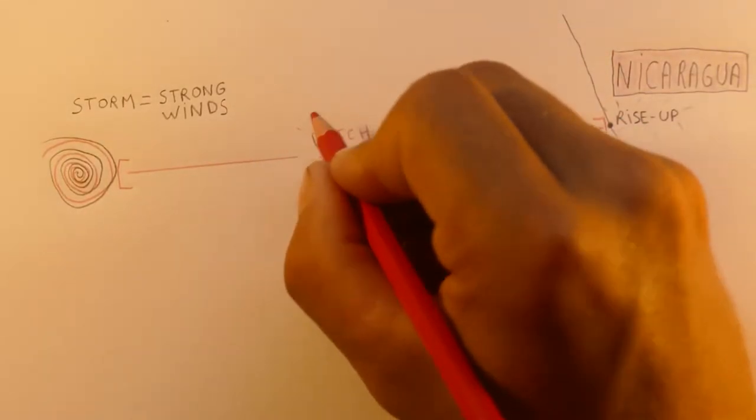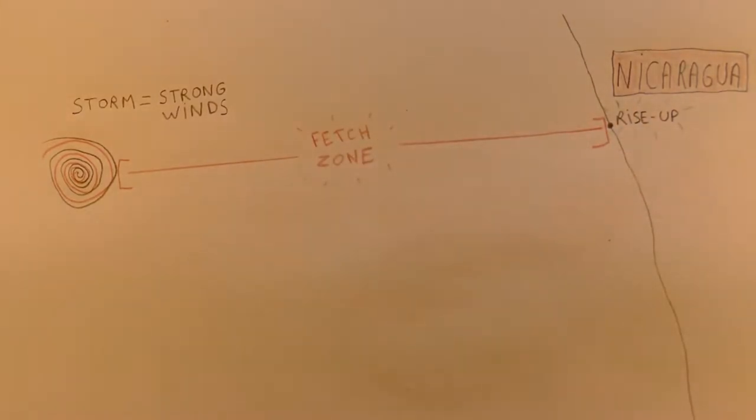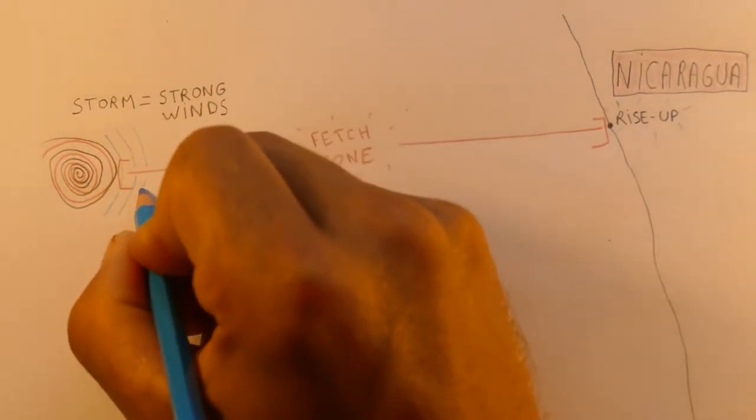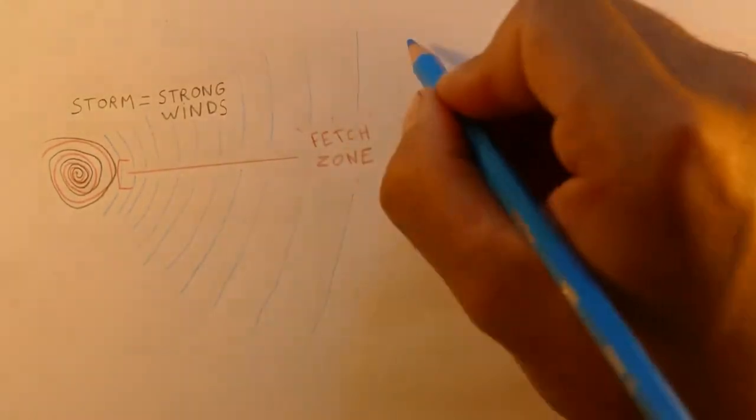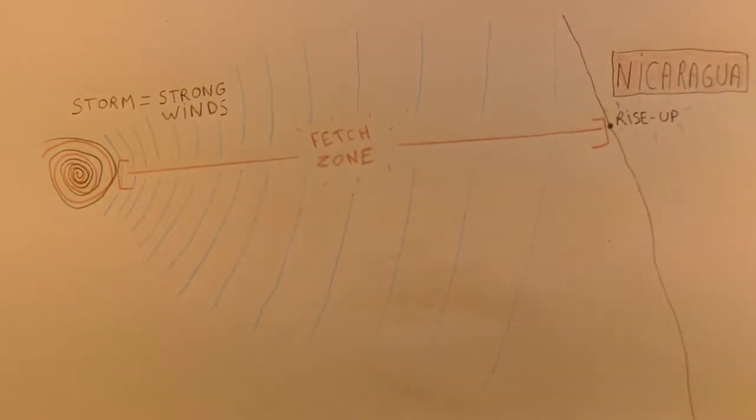The fetch zone of a swell is the distance over which it travels from the initial storm to where it makes landfall and becomes waves. What's going on in this fetch zone is going to dictate whether that swell arrives at the beach clean or whether it's messed up.